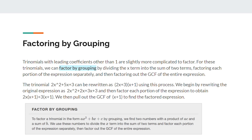The next one is factoring by grouping. Trinomials with leading coefficients other than 1 are slightly more complicated to factor. For these trinomials, we can factor by grouping by dividing the x term into the sum of two terms, factoring each portion of the expression separately, and then factoring out the GCF of the entire expression. For example, 2x squared plus 5x plus 3 can be rewritten as 2x squared plus 2x plus 3x plus 3, then factored to obtain 2x plus 3 times x plus 1, by pulling out the greatest common factor of x plus 1.